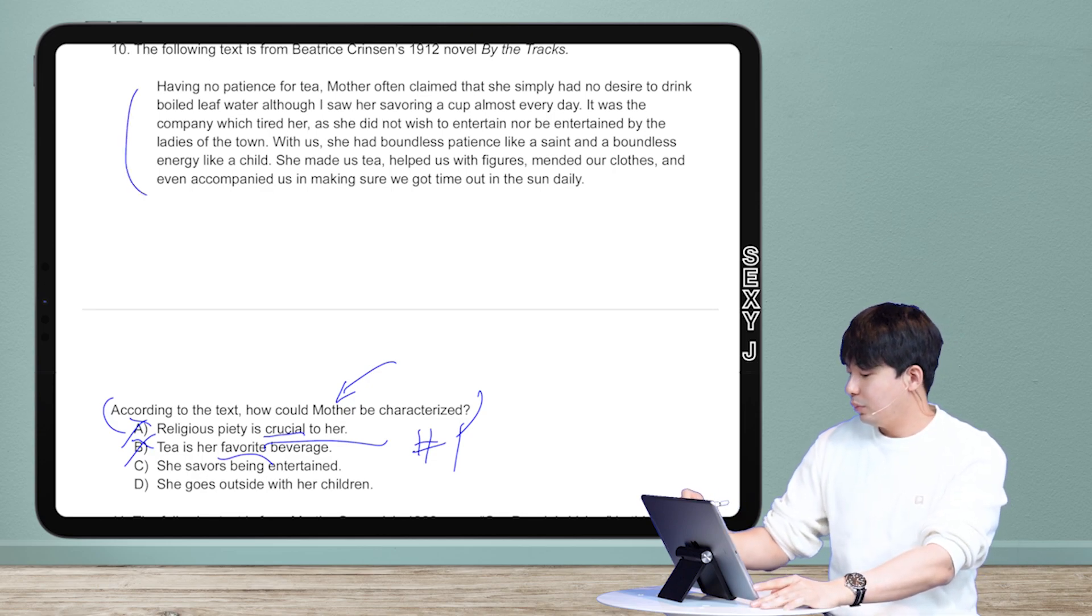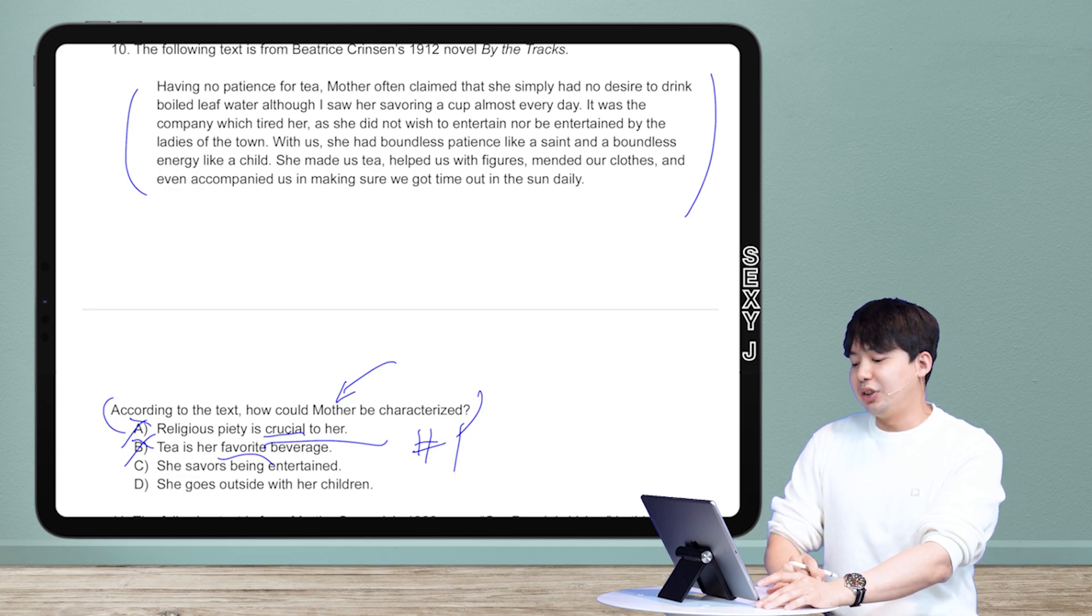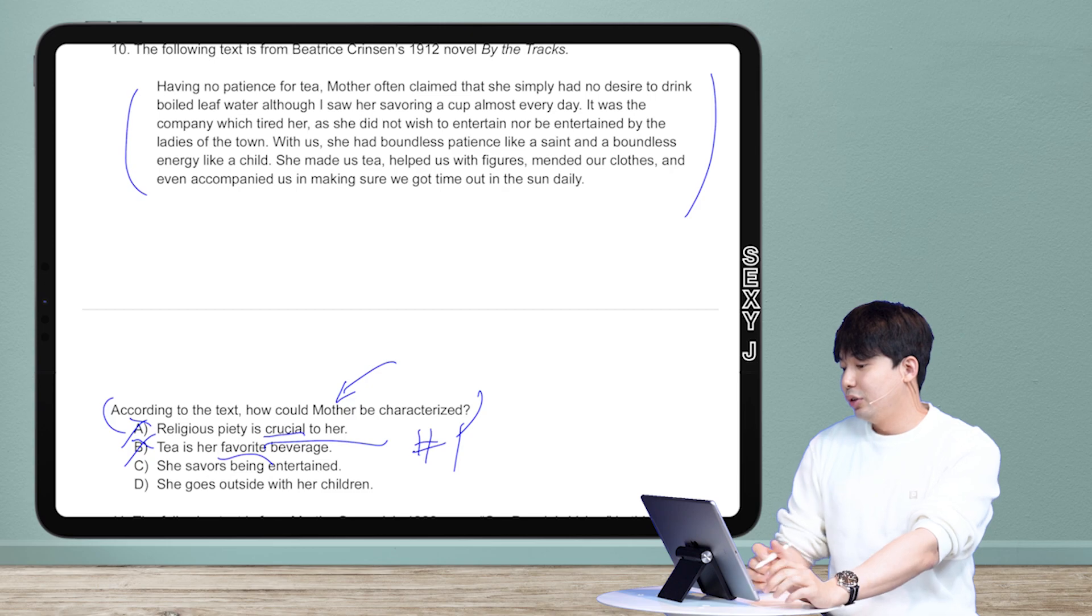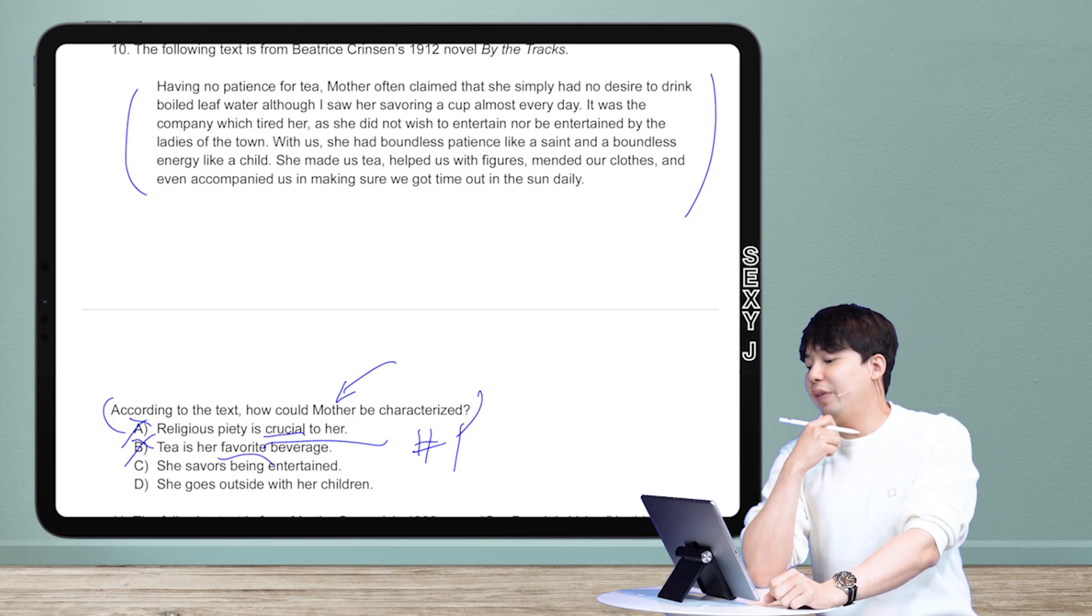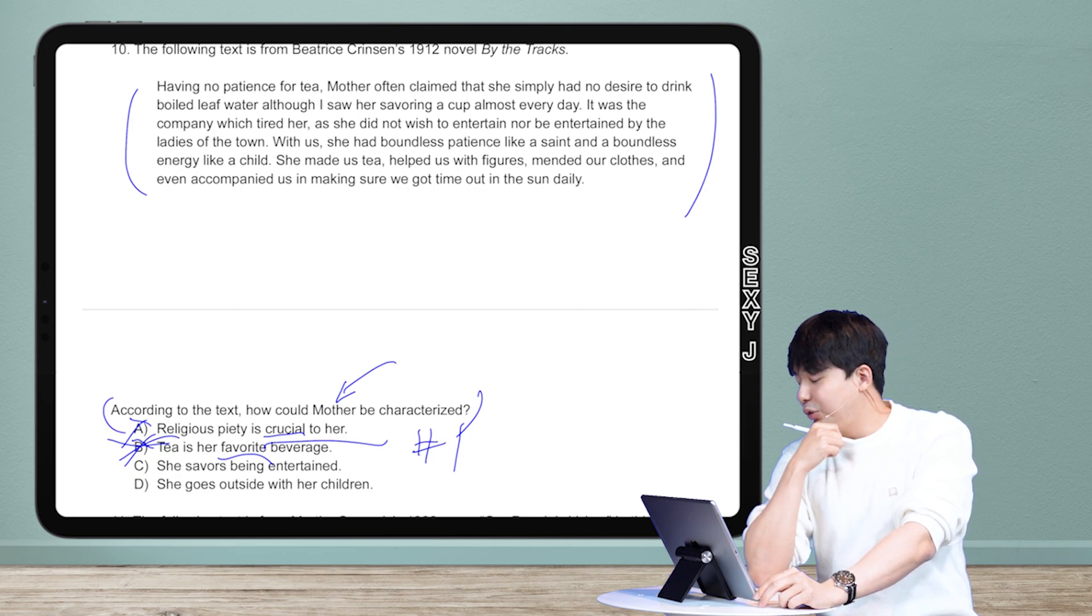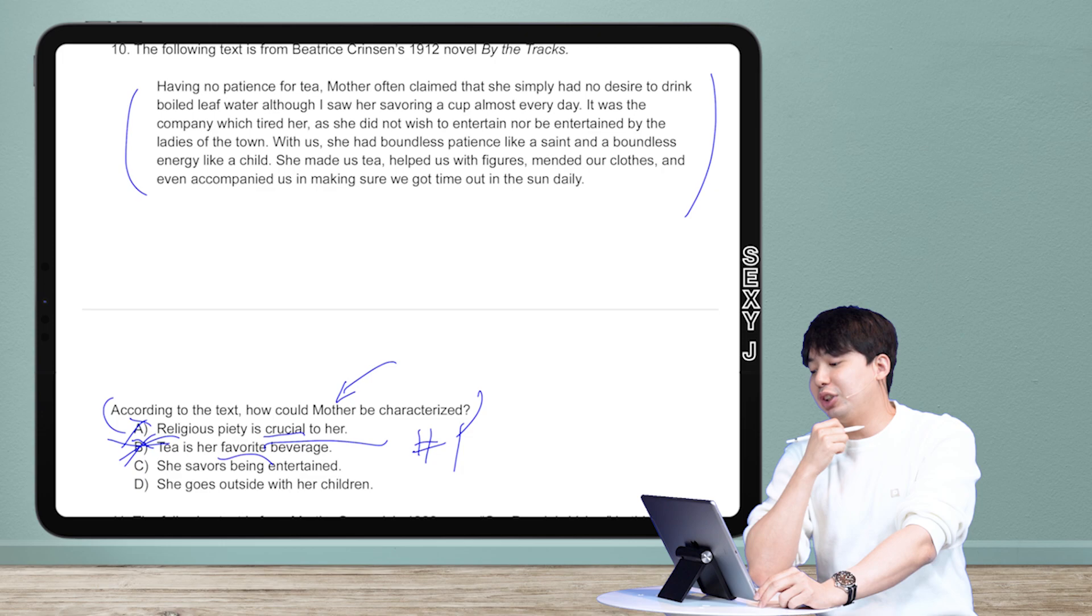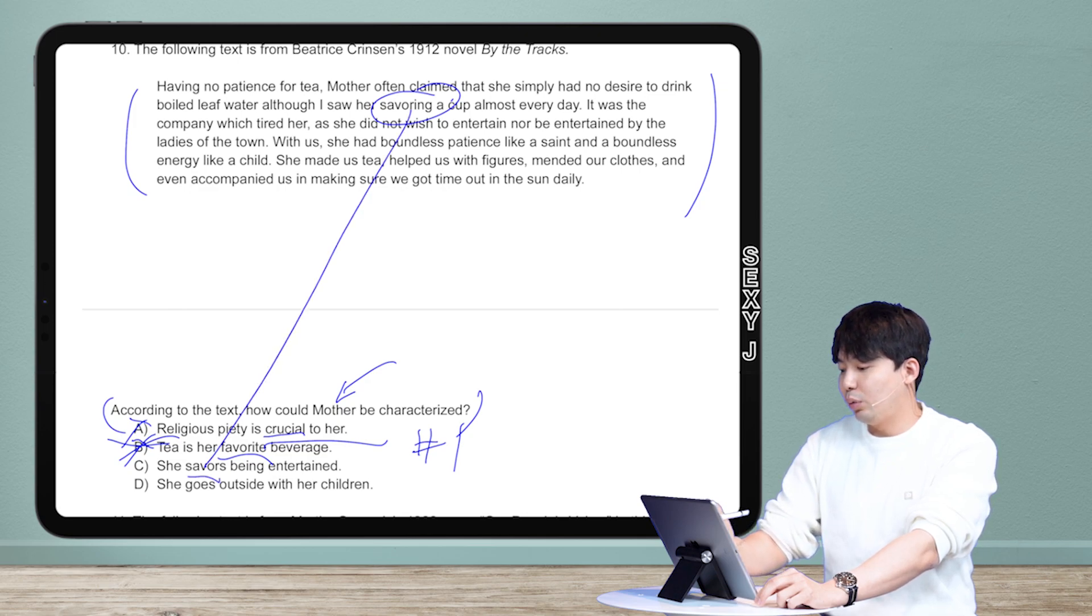So those two things are out and what is the answer? Let's go to the text now. The likely answer here is D because that's just like a nothing statement but we'll check if it is. Let's start from line one. Having no patience for tea, so she doesn't like tea so this is doubly out. Mother often claimed that she simply had no desire to drink boiled leaf water although I saw her savoring a cup almost every day. You see this here, the word savor, and that's why the answer C is here.